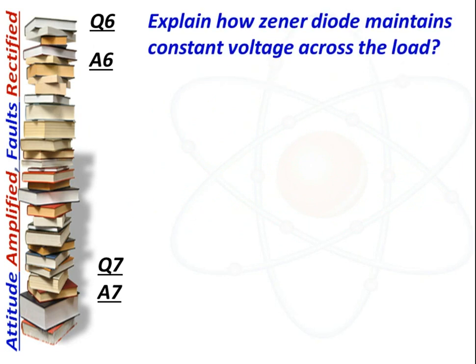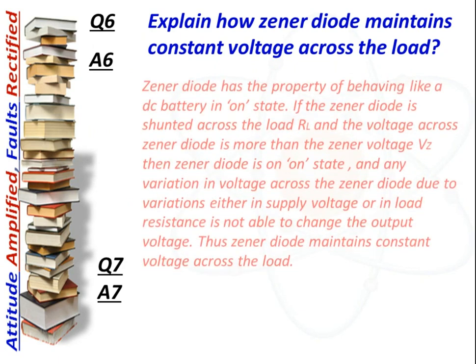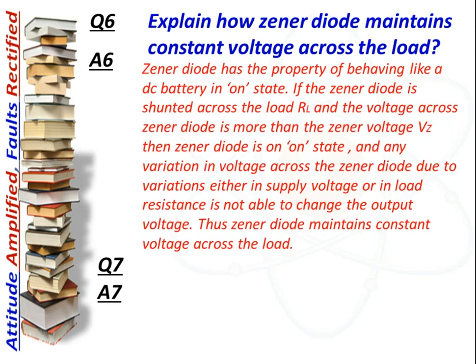Next question: How does a zener diode maintain constant voltage across the load? Answer: A zener diode behaves like a DC battery in the on state. If the zener diode is shunted across the load RL and the voltage across it exceeds the zener voltage Vz, it enters the on state. Any variation in voltage due to changes in supply voltage or load resistance does not change the output voltage, thus maintaining a constant voltage.